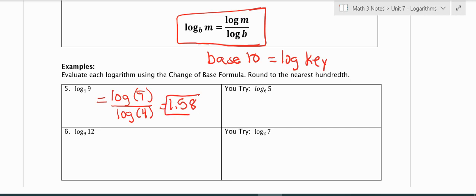So what that means is that 4 to the 1.58 power is equal to 9, which actually makes sense, right? Because 4 to the second is 16, 4 to the 1 is 4, so you knew it's somewhere between 1 and 2.